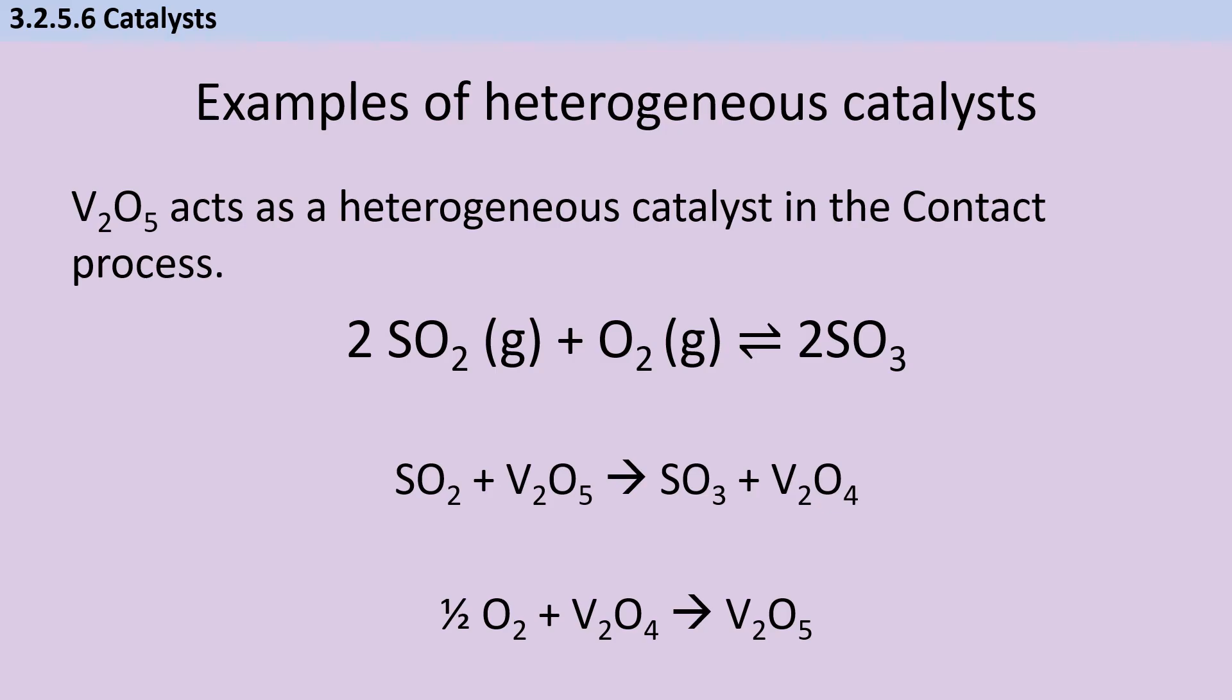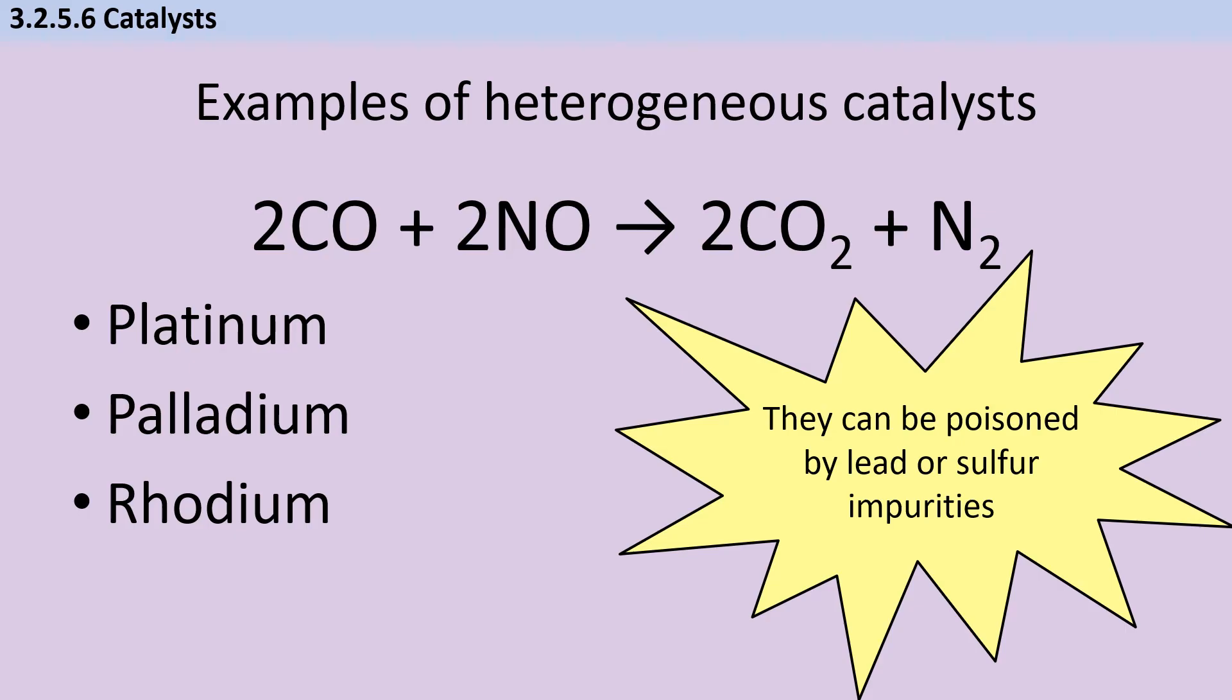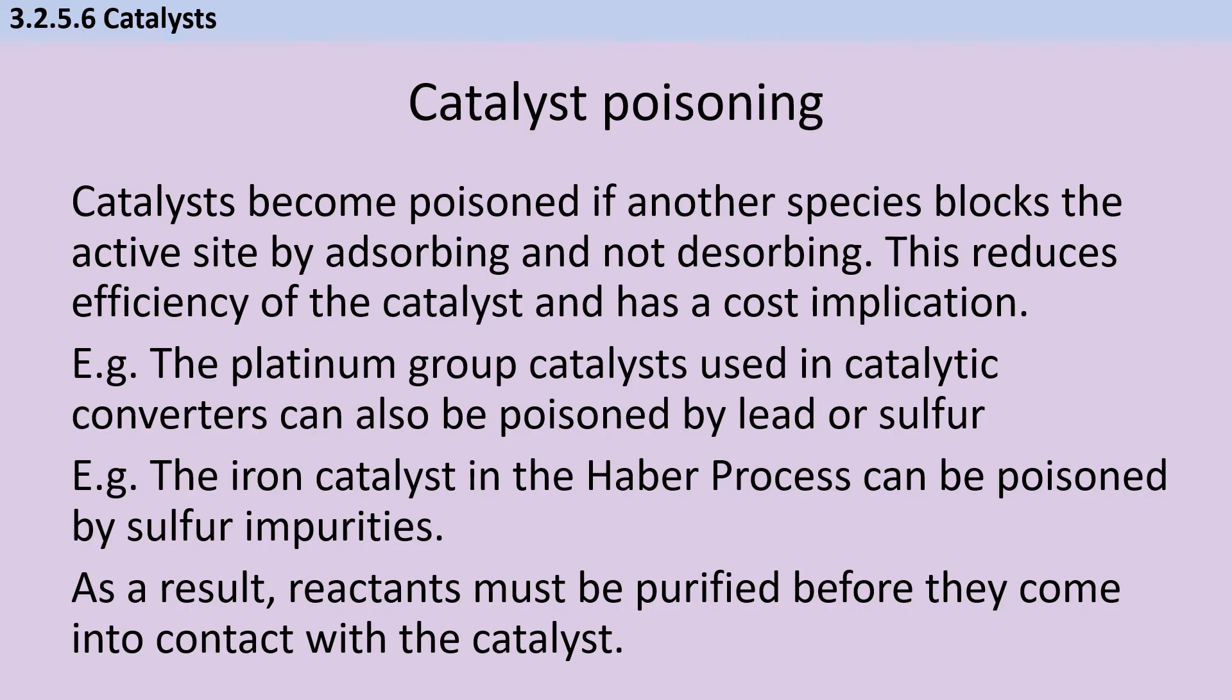Vanadium pentoxide is used as a catalyst in the first step of the contact process, which is used to make sulfuric acid. We take vanadium with oxidation state +5 and it's reduced to oxidation state +4 in the formation of sulfur trioxide. Then this comes together with more oxygen to restore the original vanadium to its +5 oxidation state. Platinum and other platinum group metals are commonly used in catalytic converters in vehicles to reduce production of carbon monoxide and oxides of nitrogen. But these catalysts can easily be poisoned by lead or sulfur impurities, making it necessary to remove these from fuel. You should also know that iron is necessary as a catalyst in the Haber process to reduce energy requirements. To prevent poisoning of catalysts, which reduces efficiency and has cost implications, reactants need to be purified before they come into contact with that.